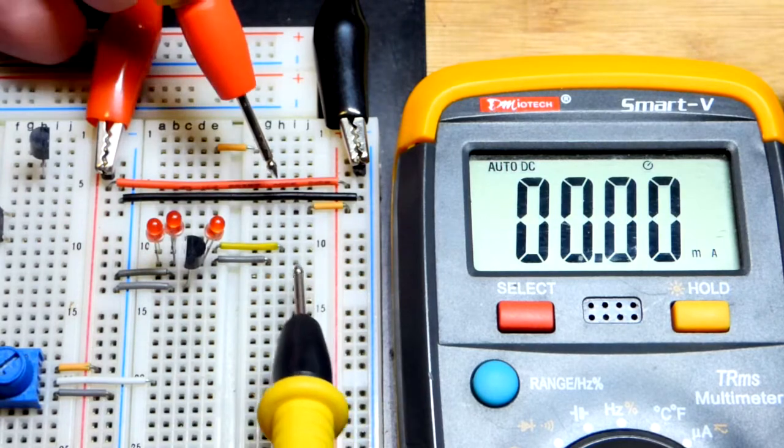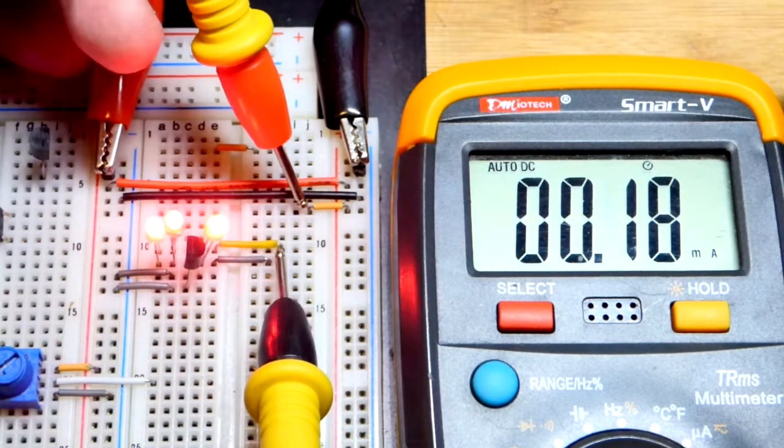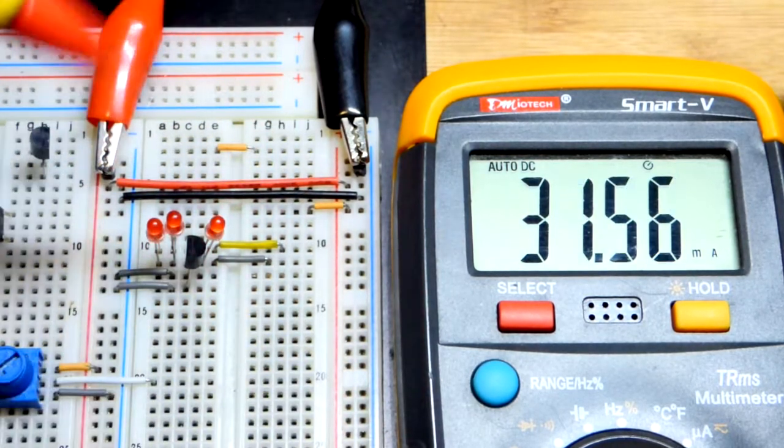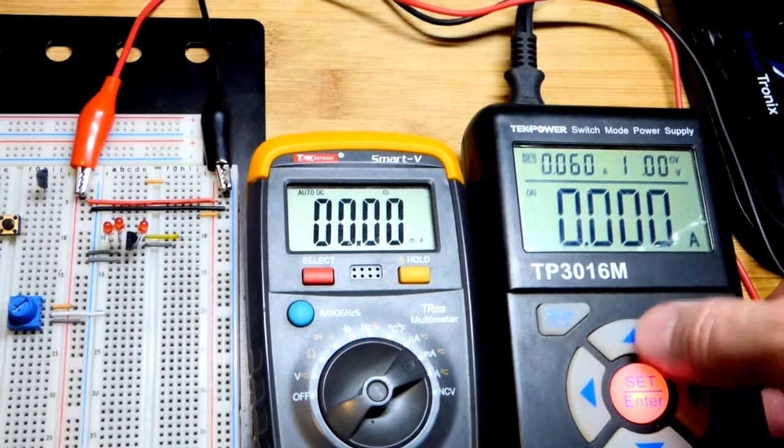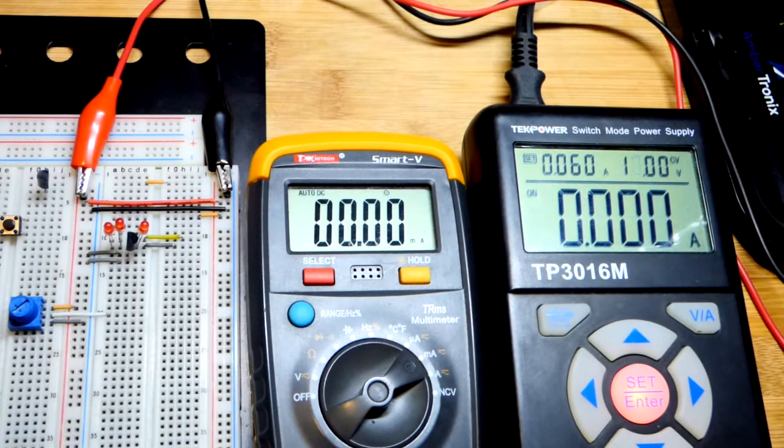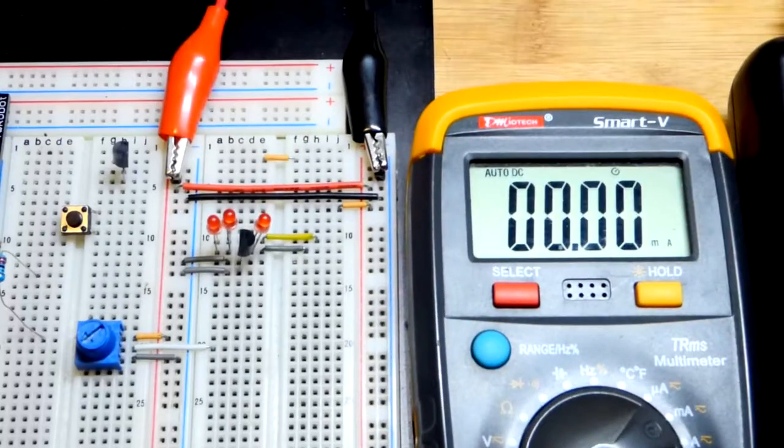I have the probes backwards. We got 34. You just get a negative number. It doesn't hurt anything. But we got 34. As the component gets hotter, though, as I said before, then it starts dropping in current a little bit.